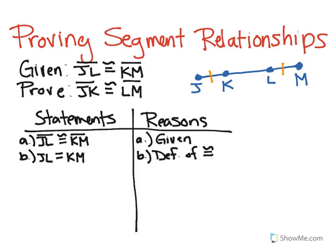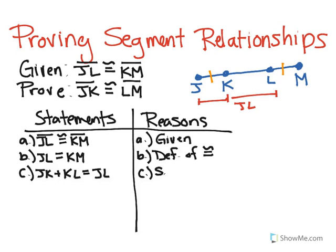The next thing I'm going to do is break apart my segment so I can get more information, because there's the segment addition postulate that says if I add two segments, it's equivalent to the entire segment. When I look at my picture, I know that if I add JK to KL, that gives me JL — and that's important because JL is part of my given information. So we'll start there, and my reason is the segment addition postulate, which I'll abbreviate as SAP.